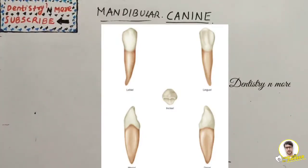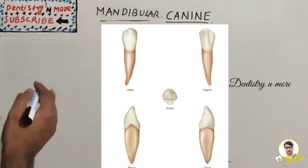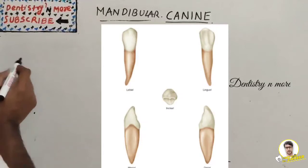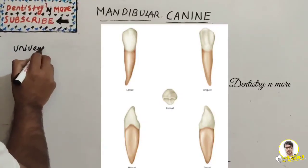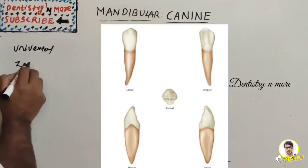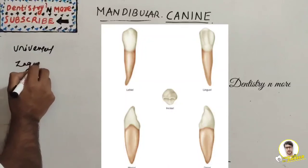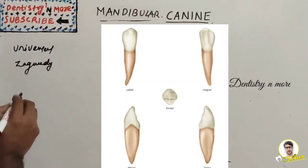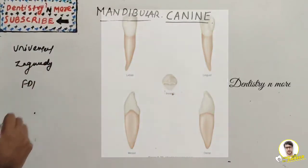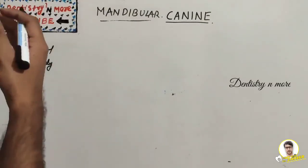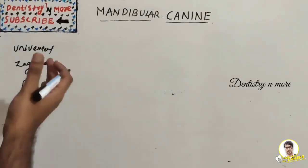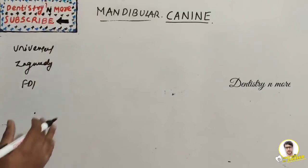So we'll start with mandibular canine. First, the tooth numbering system. We have three systems: one is the Universal system, then comes the Zsigmondy-Palmer system, then the FDI system. I'm not drawing them again and again, so I hope you know the systems very well.